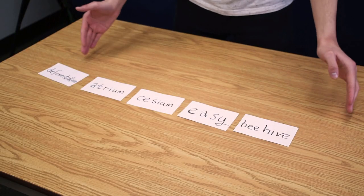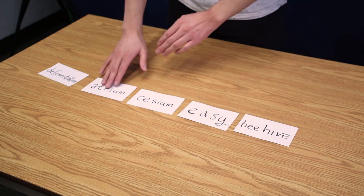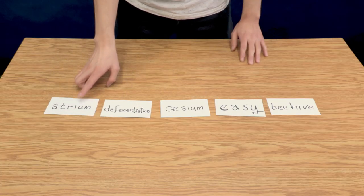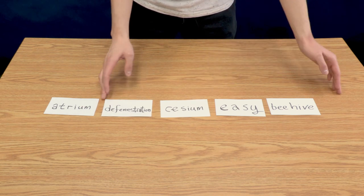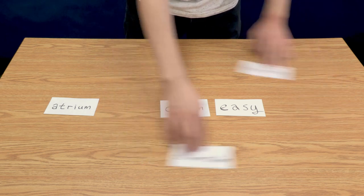So what I'm going to do is I'm going to take the item that I think should go at the first element of the list and swap it with what is actually there already. So atrium should go first. And then once again, what is the first thing that should go here? I think it should be beehive, so I'm going to swap these.